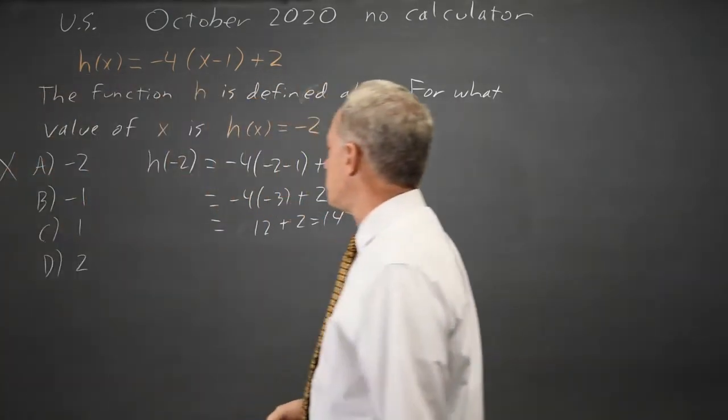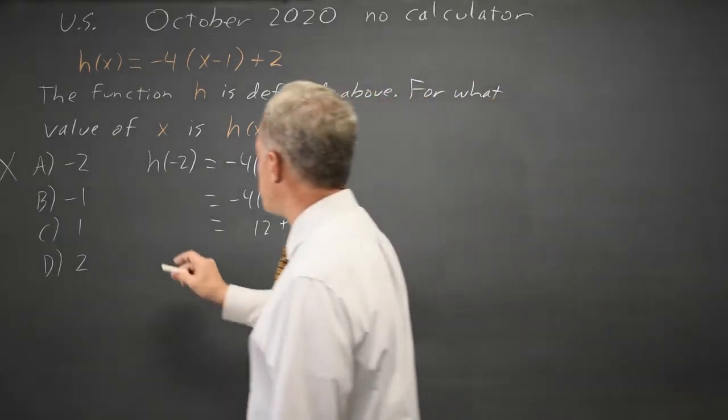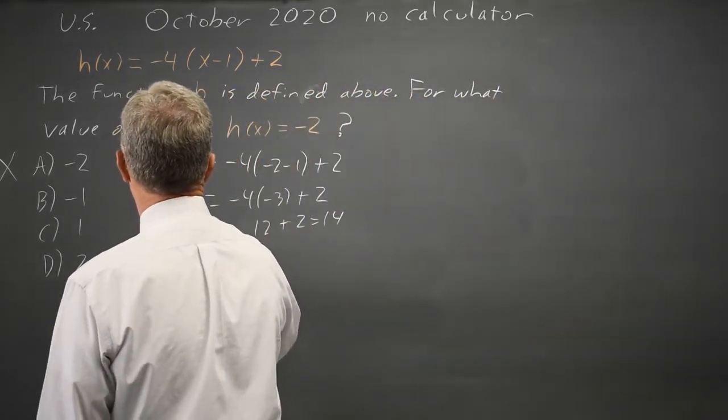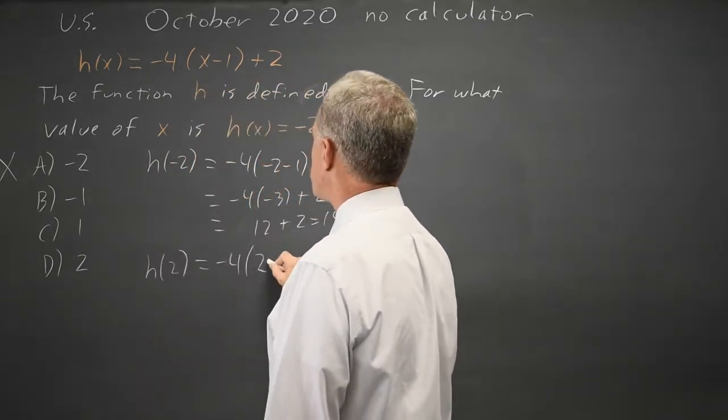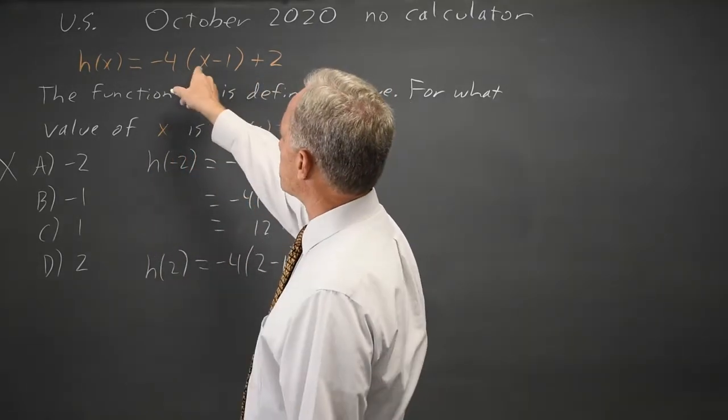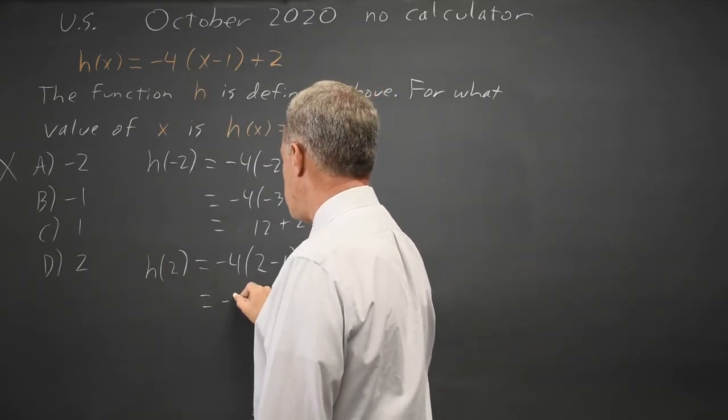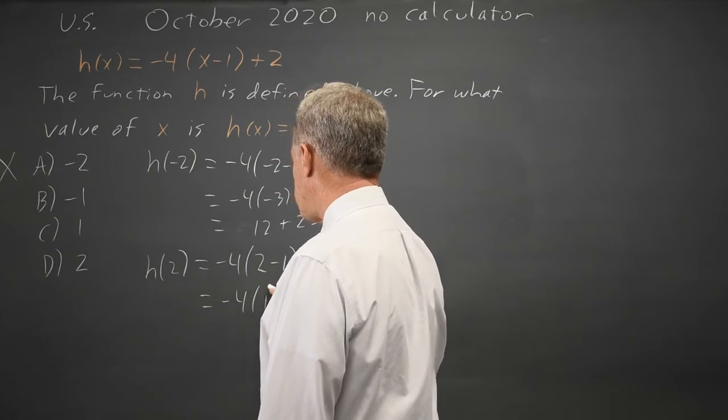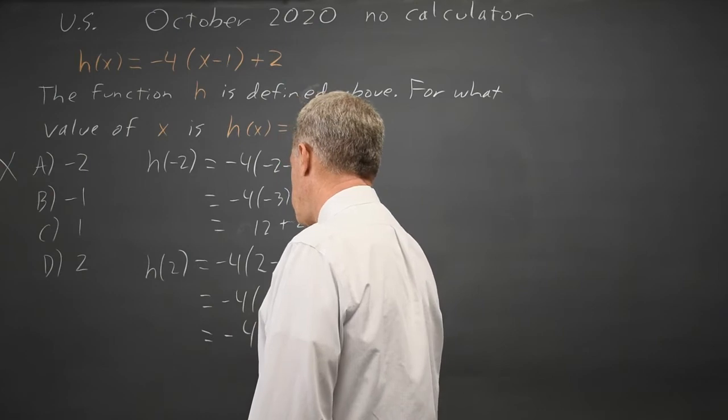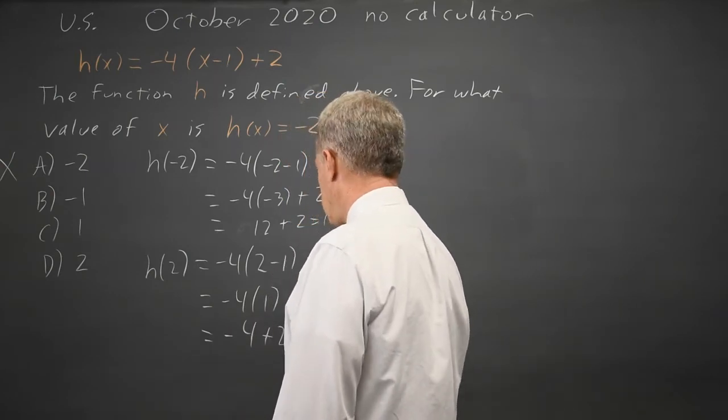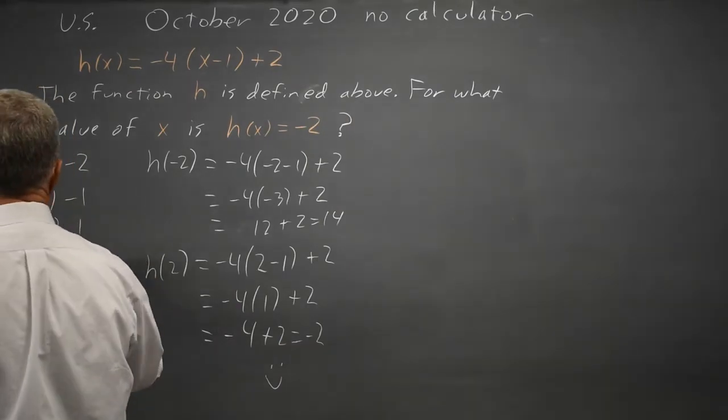So how about we jump to the other end of the spectrum and try h(2), which is -4(2-1)+2. So that is -4, 2-1 is 1 plus 2. Negative 4 plus 2 equals negative 2. And that is what we're looking for. The correct answer is choice D.